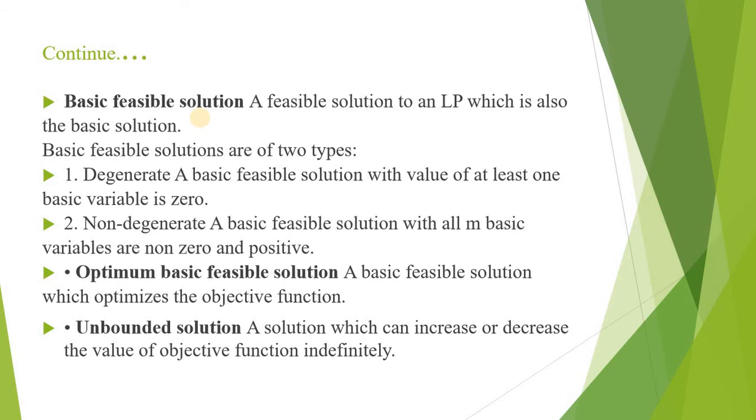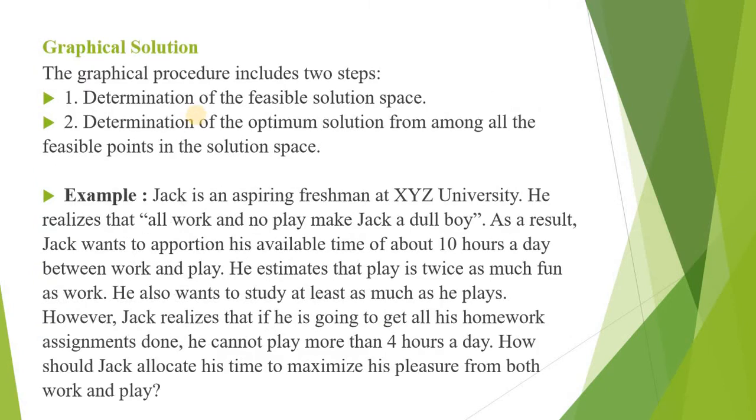Basic feasible solution: the feasible solution to an LP problem which is also a basic solution. Basic feasible solutions are of two types: degenerate and non-degenerate. In degenerate, the basic variables will also take the value zero. In non-degenerate, all basic variables are non-zero. Optimal basic feasible solutions are those solutions which optimize the objective function and are also a basic feasible solution. Unbounded solutions are solutions which increase or decrease the objective function indefinitely.